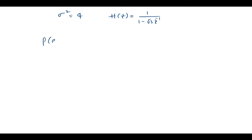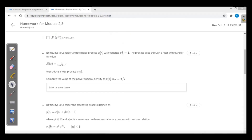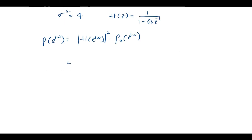The power spectral density P_x(e^jω) = |H(e^jω)|² · P_w(e^jω). Since the input is white noise, its power spectral density is simply the variance. So it is |1 / (1 − √3·e^(−jω))|² multiplied by the variance, giving the power spectral density formula.